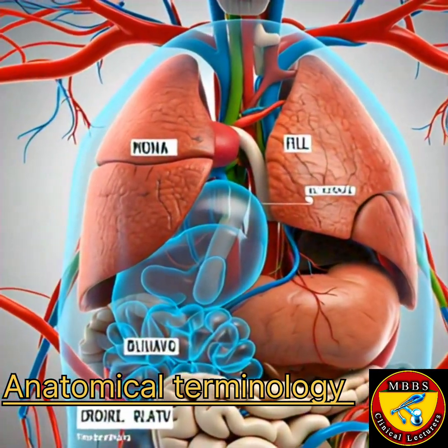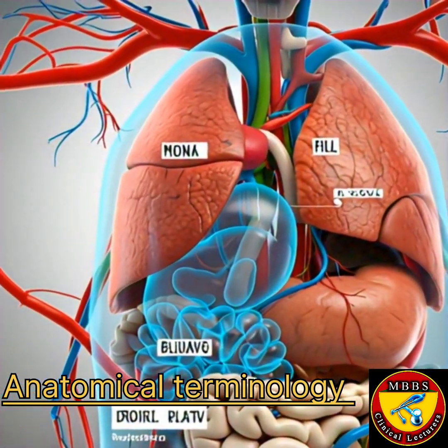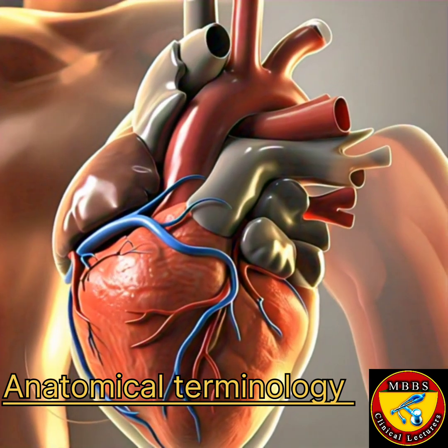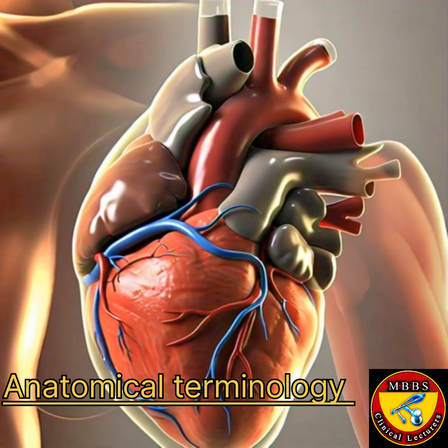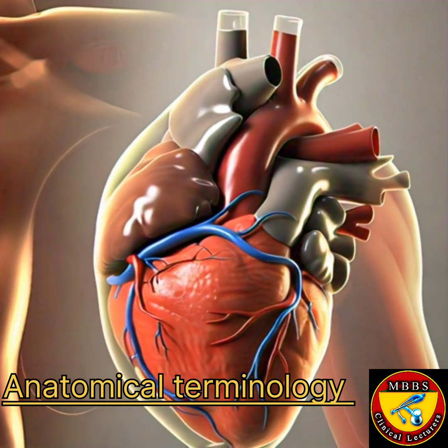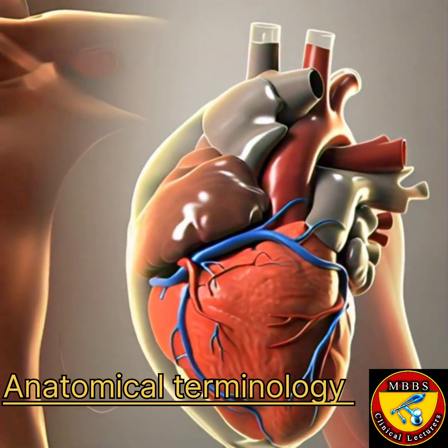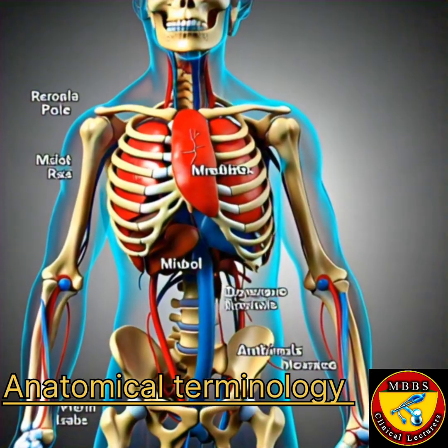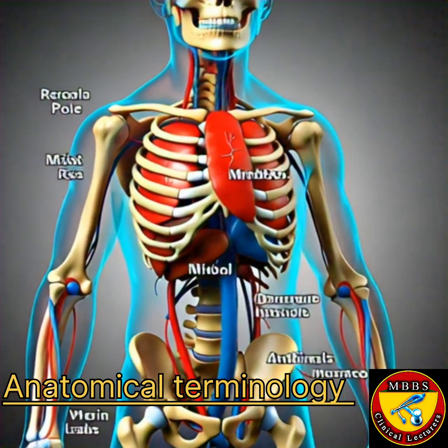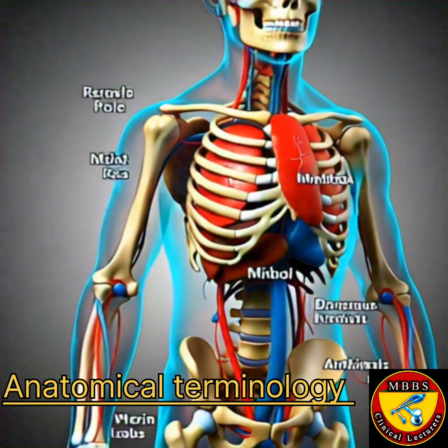Anatomical Planes. 1. Sagittal Plane – An imaginary plane that divides the body into left and right halves, running from the front to the back.